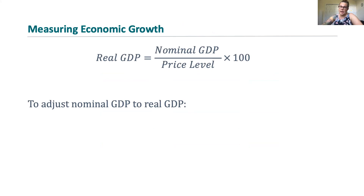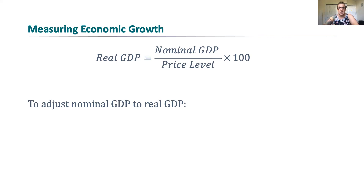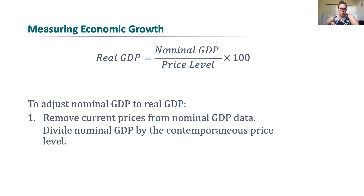Here is the first equation you should have memorized. It tells us the relationship between nominal GDP and real GDP. Specifically, real GDP equals nominal GDP divided by the price level, multiplied by 100. The multiplication converts the unit price into base year prices — 100 is the base year, anything above 100 means prices have gone up, anything below 100 means prices have gone down. Dividing by the price level adjusts for inflation and helps us compare GDP levels over time by capturing only increases due to changes in production, not due to inflation.